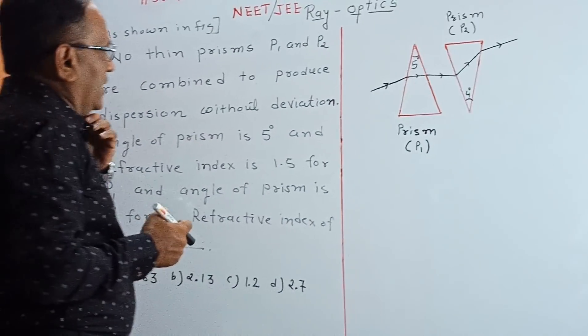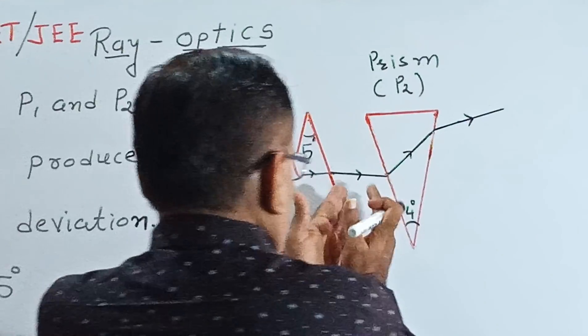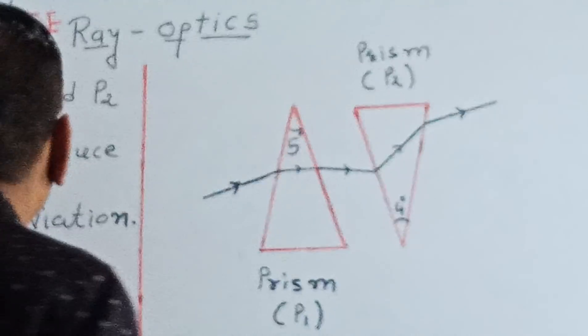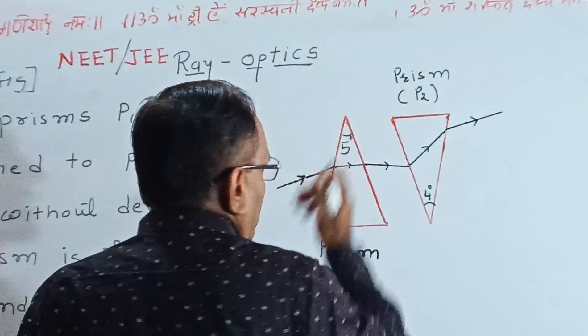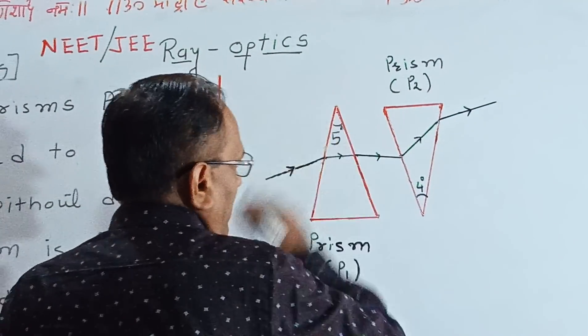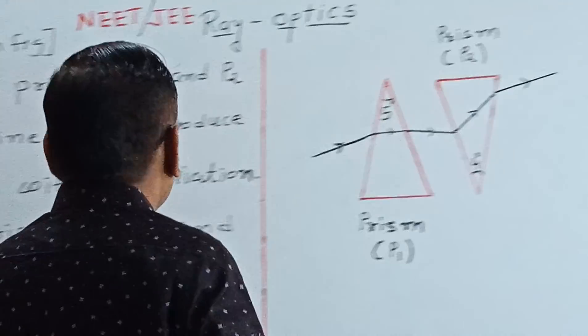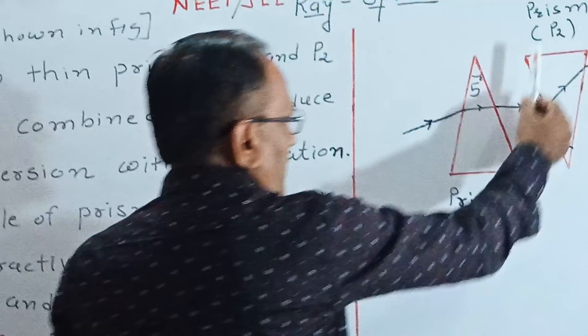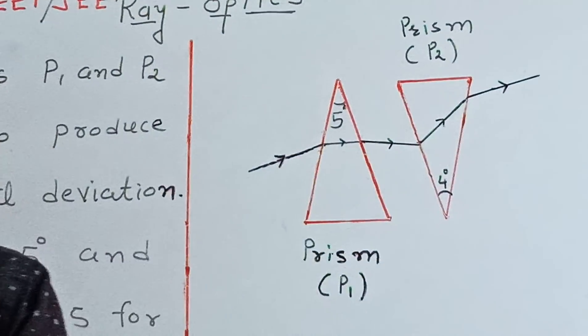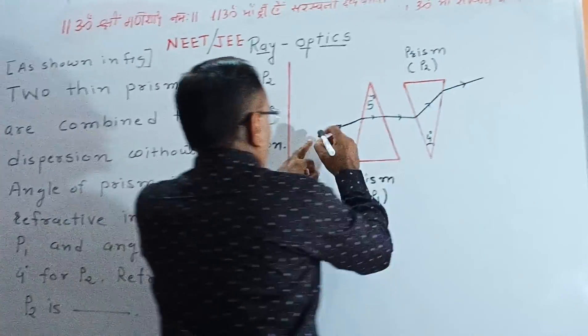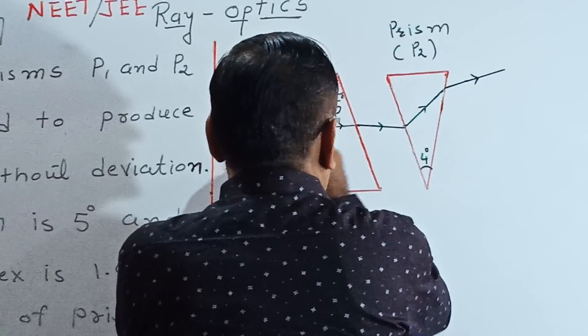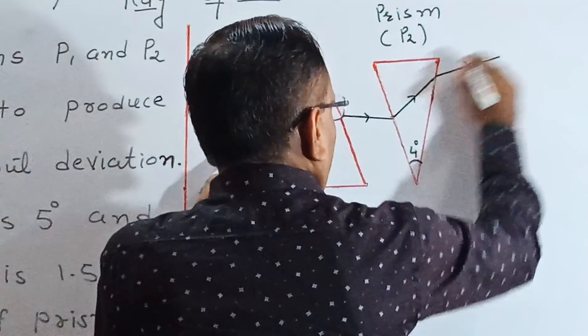So here we combine the prism with some separation. We take two thin prisms, so the angle of prism is very small, 5 and 4 degrees. This is prism P1 and P2. They produce dispersion without deviation, so this incident ray emerges without deviation.